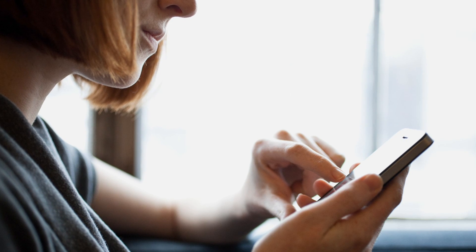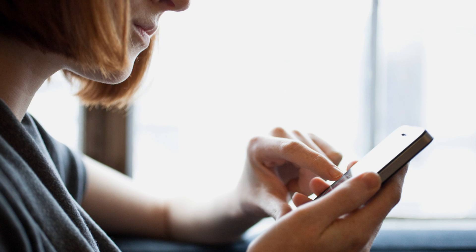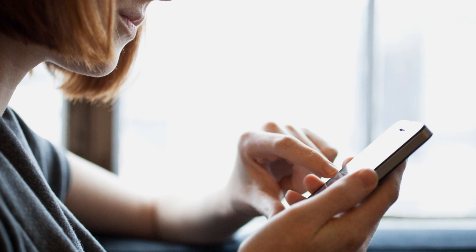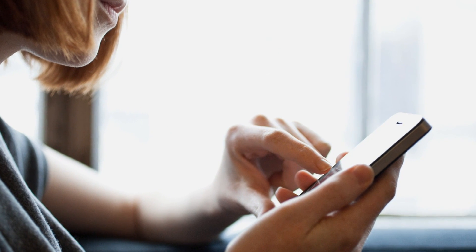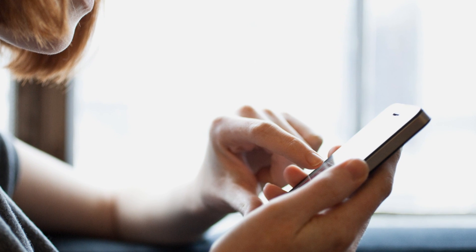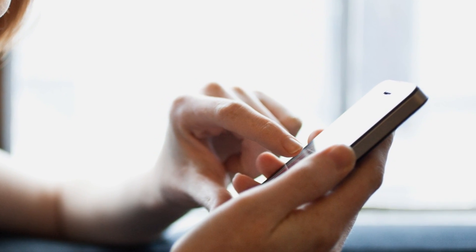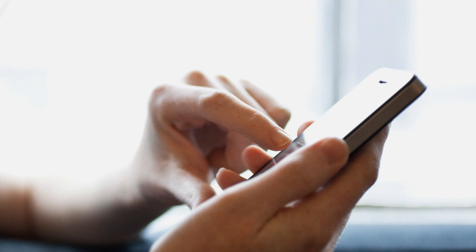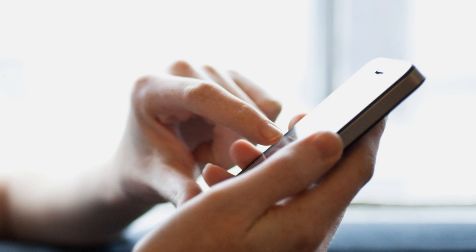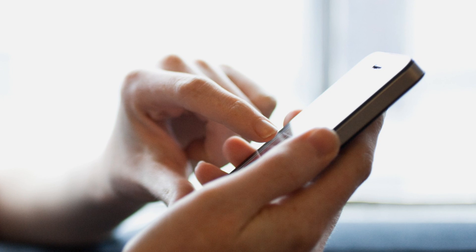A new study conducted by researchers at ETH Zurich and published in the journal Current Biology found that electrical activity in the brain increases when people use their fingers to operate the touchscreens of their smartphones. The researchers also found that regular touchscreen use increased sensitivity in the fingertips.